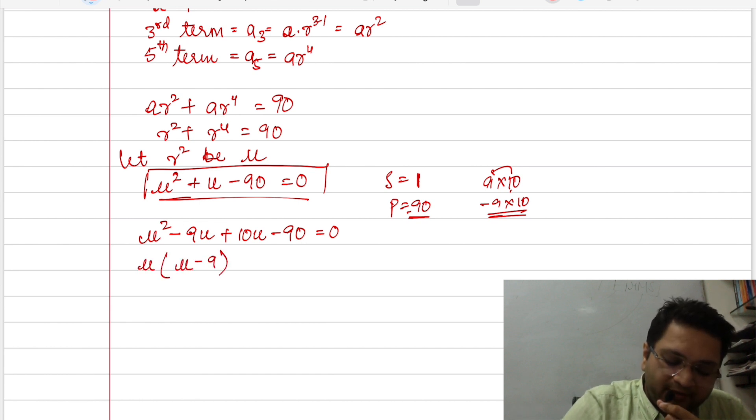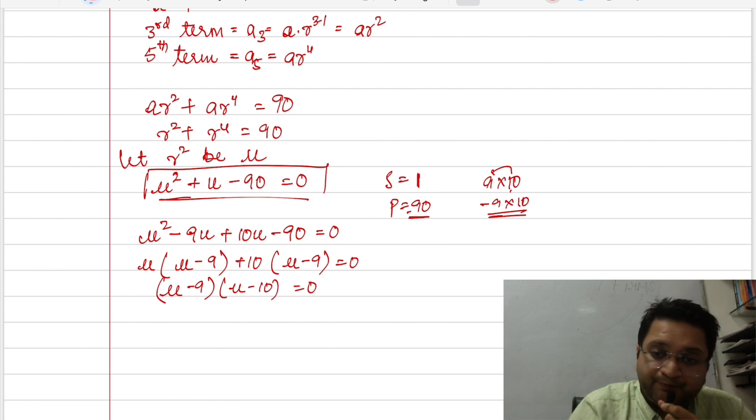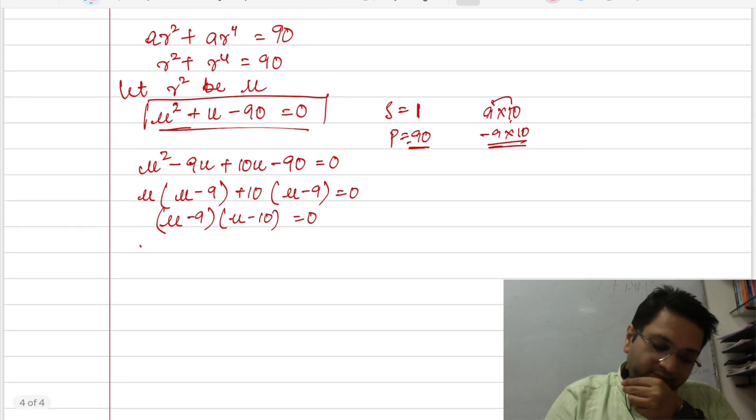So if you see here, we take u common here, u minus 9. And here, u minus 9. So here, u plus 10. So I have u minus 9 and u plus 10 is equal to 0. If you see here, I will do further calculation here. u will be equal to 9 or will be equal to minus 10.